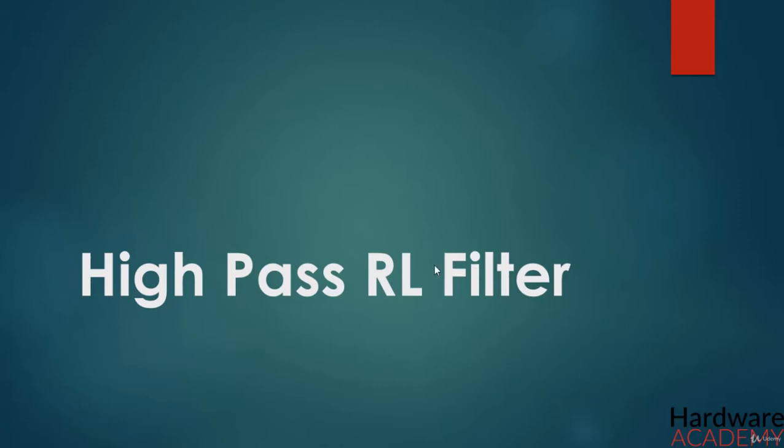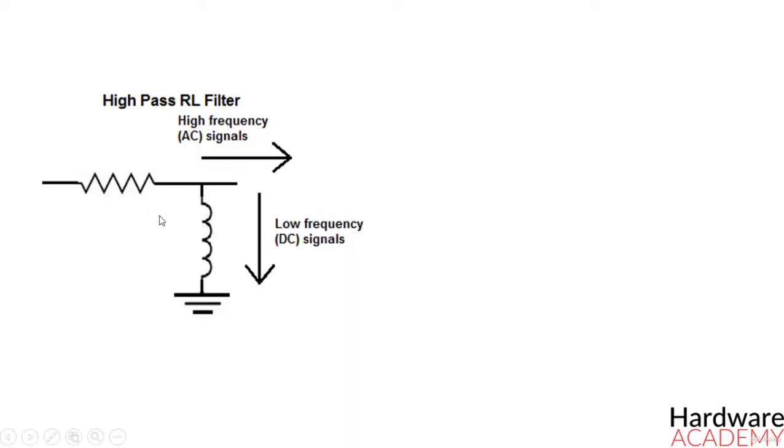A high-pass RL filter is a filter composed of a resistor and inductor which passes through high-frequency signals. To build a high-pass RL filter, the inductor is placed in parallel to the power source signals entering the circuit, as shown in this diagram.